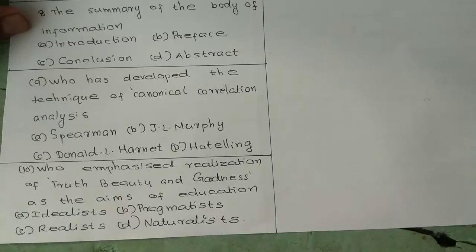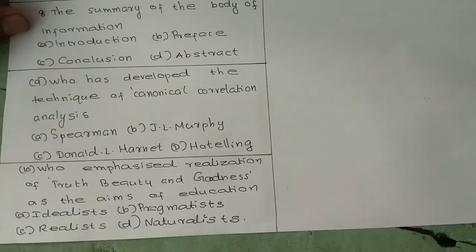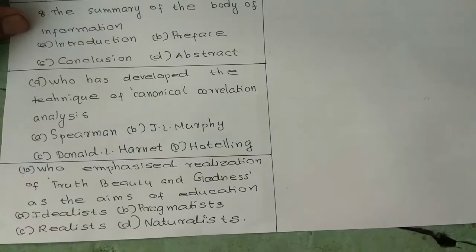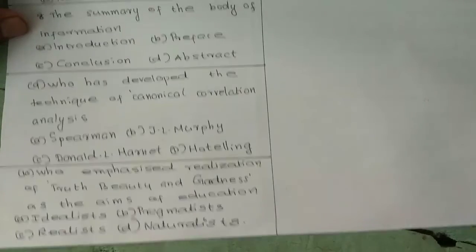Question 10: Who has emphasized the realization of truth, beauty and goodness as the aims of education? Option A: Idealists. Option B: Pragmatists. Option C: Realists. Option D: Naturalists.